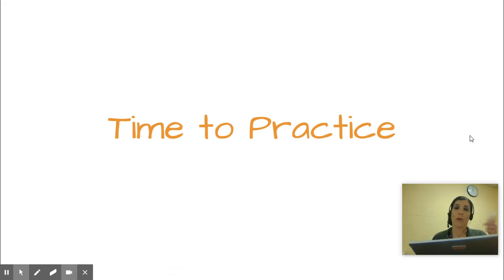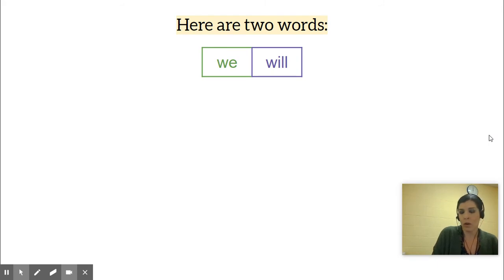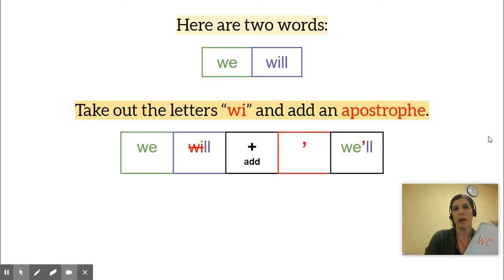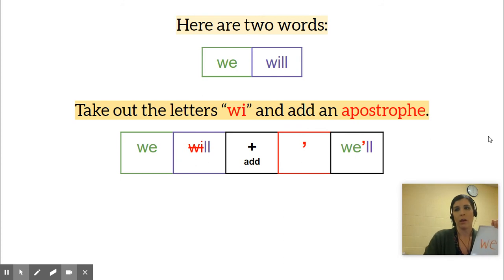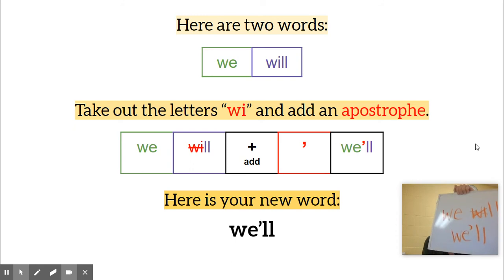Now it's time to practice with your dry erase board, marker, and eraser. Here are your two words: 'we will.' Say it — 'we will.' We're going to take out 'wi,' so cross that out because you no longer need it. Your new word will be 'we'll' — W, E, apostrophe, L, L — 'we'll.'